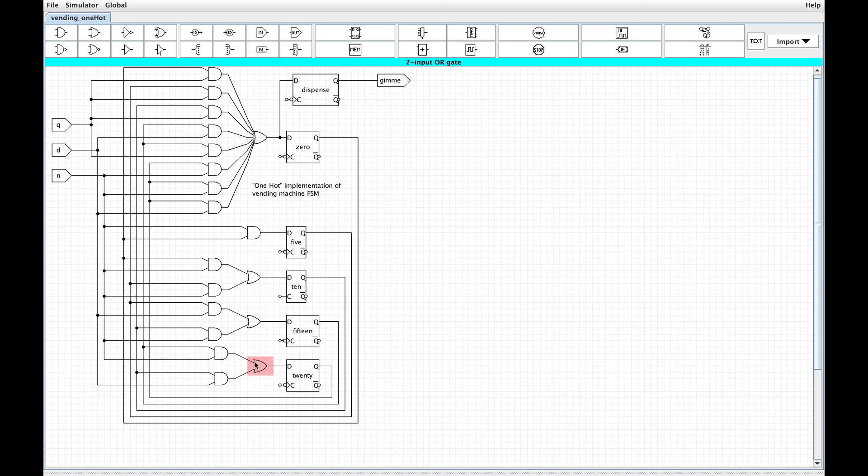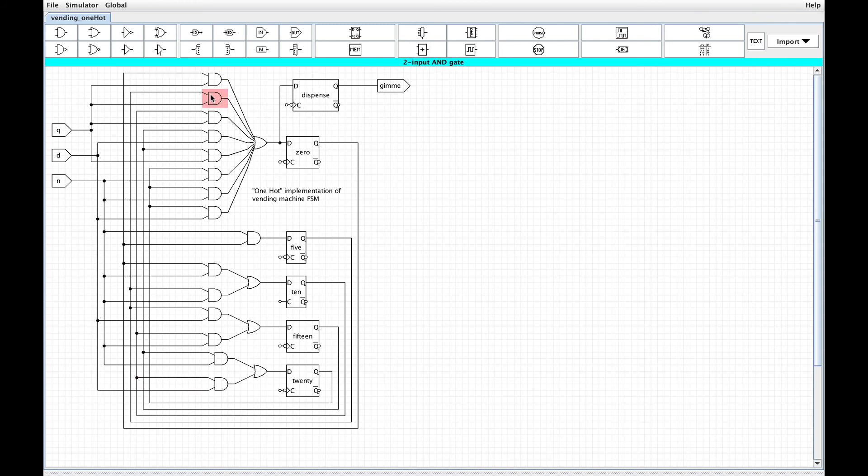Similarly for the 20 cent state, you can start in the 15 cent state and add a nickel or you can start in the 10 cent state and add a dime. And of course there's a number of ways to get back to the zero state. Any combination of states and money that puts you over the 25 cent threshold sends you back to the zero state and also produces that output that will open the machine to let you get your newspaper. The other cool thing about a one hot encoding is that you can work backwards. We can take this circuit and reconstruct the finite state diagram in a pretty straightforward way. Like we can look here and see that the 20 cent state has two arcs coming into it, a transition from the 15 cent state based on a nickel and a transition from the 10 cent state based on a dime and so on.